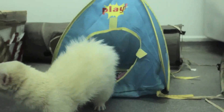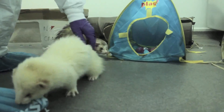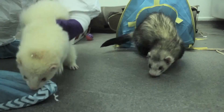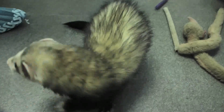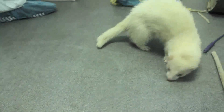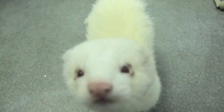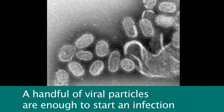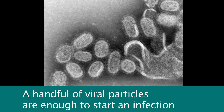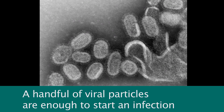We can infect one animal with a mixture of viruses that we can count very easily, and then we can expose the next animal to that infected animal and ask whether the whole mixture comes across. If it did, that would mean that a lot of viruses must move across. Incredibly, it looks as if only a handful of virus particles are enough to initiate infection in the next animal.